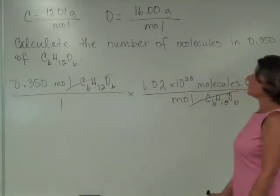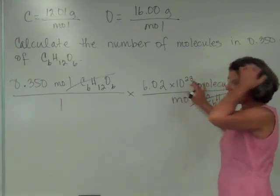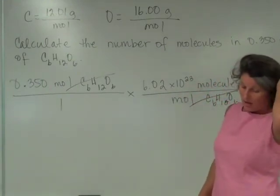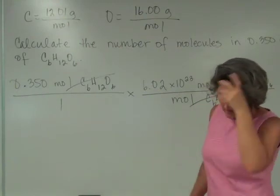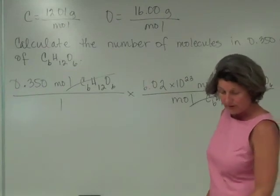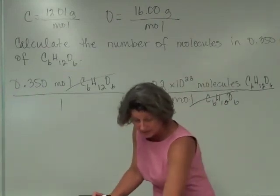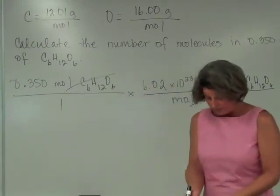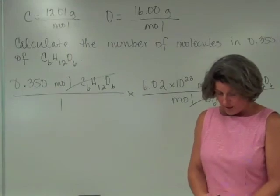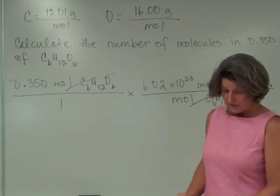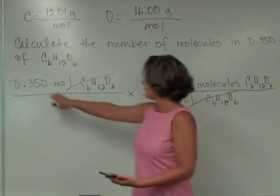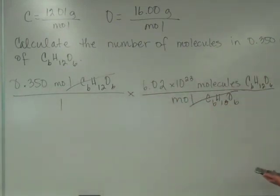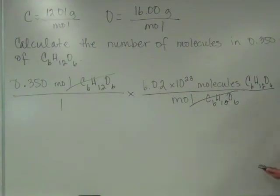We will work on putting scientific notation into your calculator tomorrow in class. So we have 0.350 times 6.02 times 10 to the 23rd, and that gives me an answer of 2.11 times 10 to the 23rd molecules of glucose.